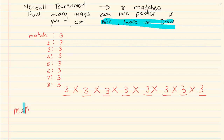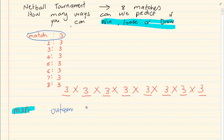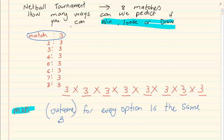I am still using the rule of m times n. But instead of writing this down so many times, since we know the outcome for every option is the same — the outcome in this case is 3 — and we have 8 options, the outcome for each match can be any of the 3, and this is going to happen 8 times. So what we have is 3 to the power of 8.